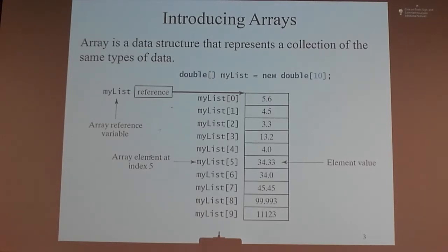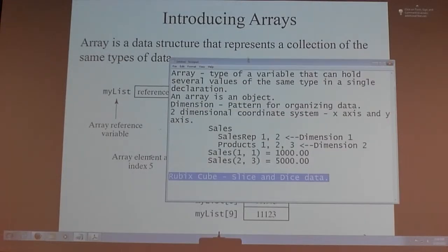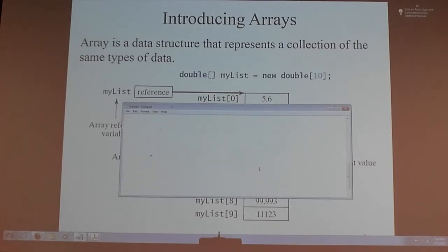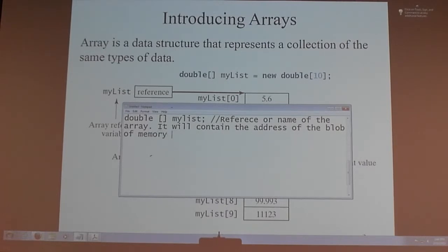So, array is a data structure that represents a collection of the same types of data. And this is how an array is declared. We use these rectangular brackets. We name the array. And we use the type. So, in the example that you see here. Double myList semicolon. If I did that, right? That is a reference of the reference or name of the array. It will contain the address of the blob of memory we are about to create.